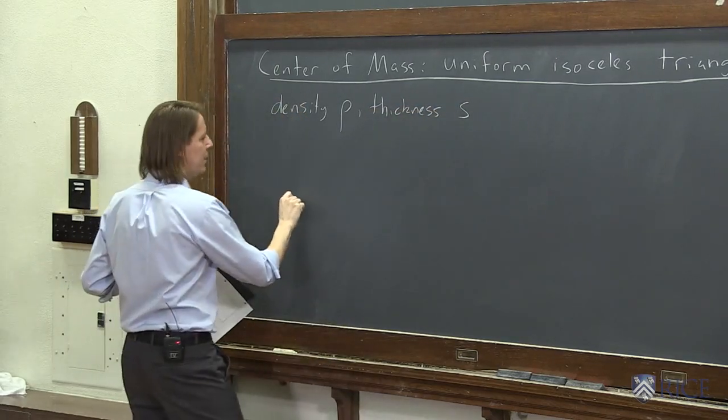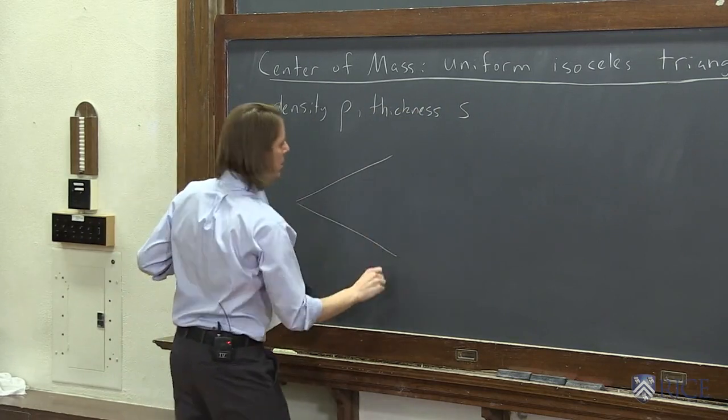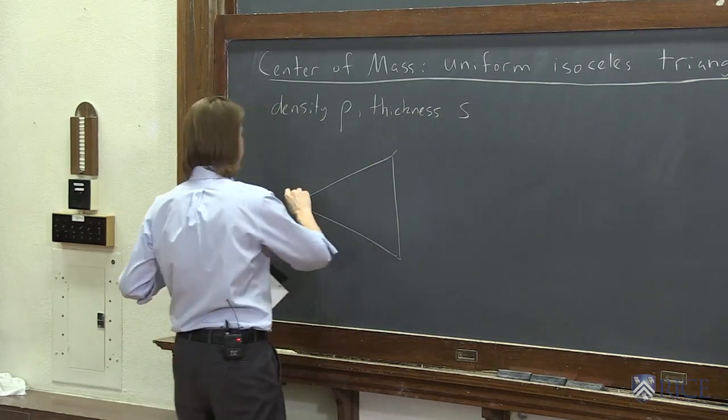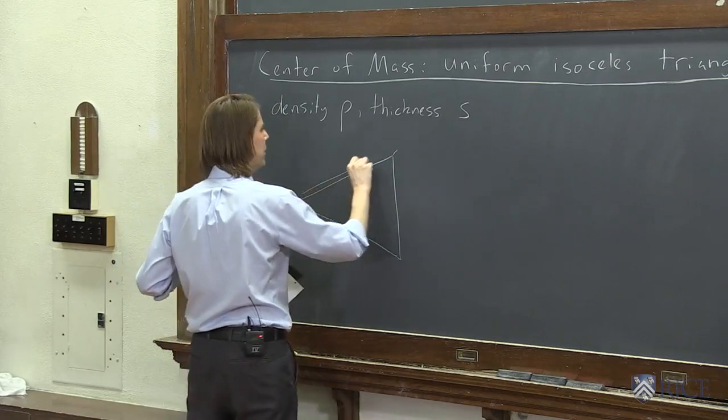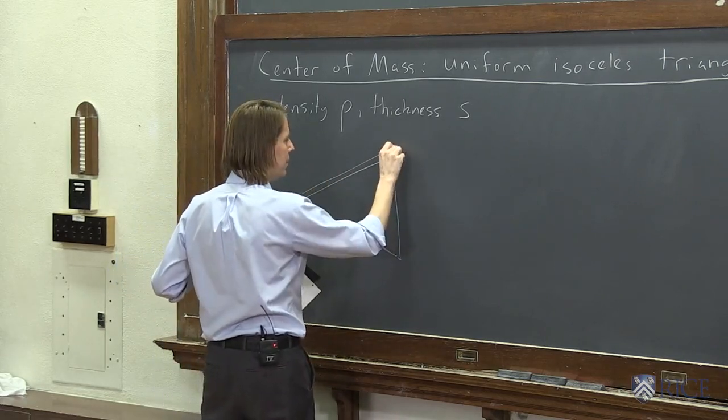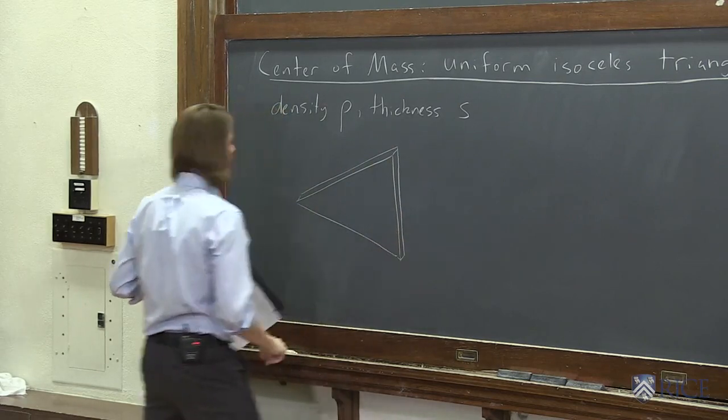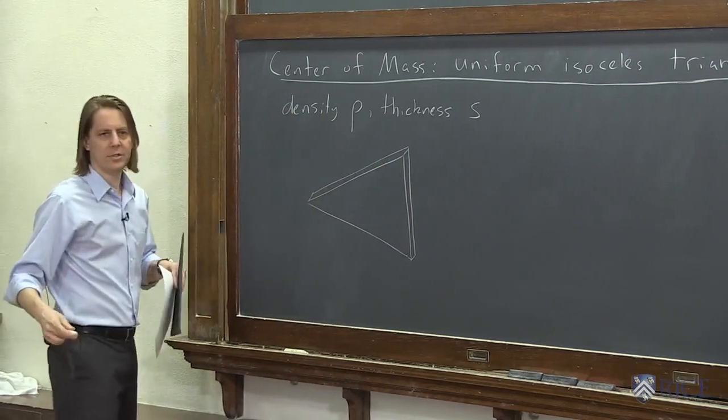So if I was going to draw it here, it'll look kind of like this, an isosceles triangle. And it has a little bit of depth to it. So we can draw the back part on it like that. There we go. It's a piece of cheese, basically.